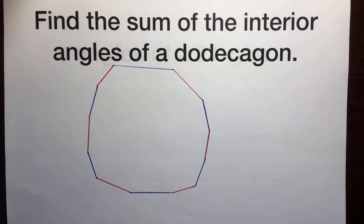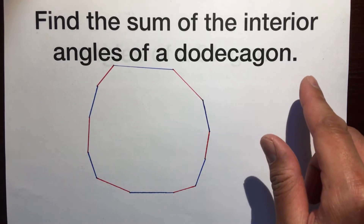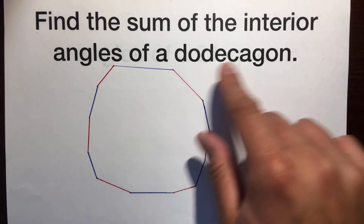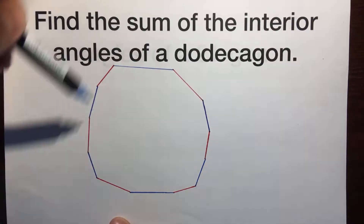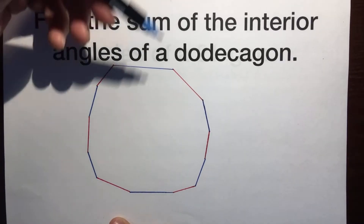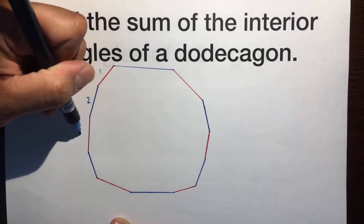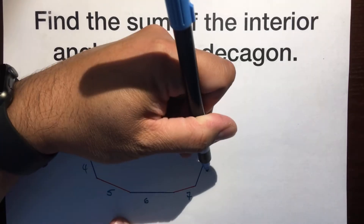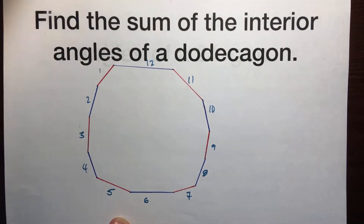What kind of word is that? Okay, a decagon is a ten-sided shape. But a dodecagon is a shape with — here's my misshapen dodecagon that took me forever to draw. Let's count how many sides there are: 1, 2, 3, 4, 5, 6, 7, 8, 9, 10, 11, 12 sides.